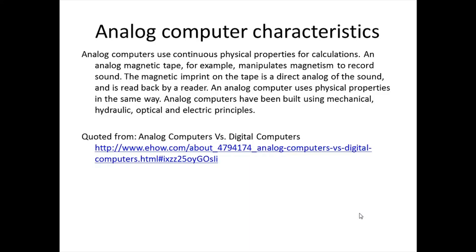Analog computers use continuous physical properties for calculations. An analog magnetic tape, for example, manipulates magnetism to record sound — the magnetic imprint on the tape is a direct analog of the sound. Analog computers have been built using mechanical, hydraulic, optical, and electrical principles. An electric analog computer differs from a digital computer in what it uses electricity for: digital computers use electricity to create binary code, while electric analog computers use the properties of electricity to replace the mechanical features of previous analog designs. For example, voltage is analogous to water pressure and amps to total water flow, allowing a hydraulic design to be converted into an electronic one.